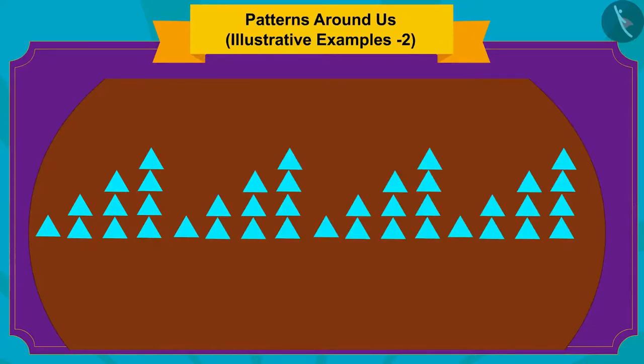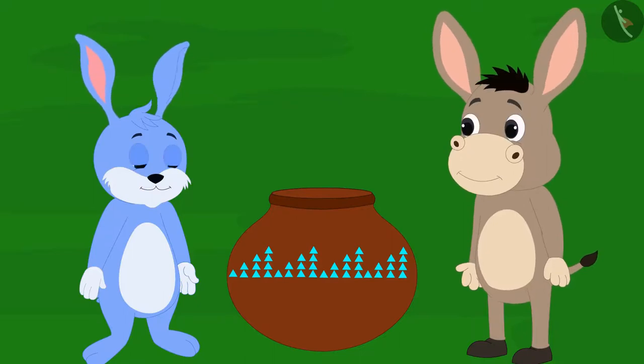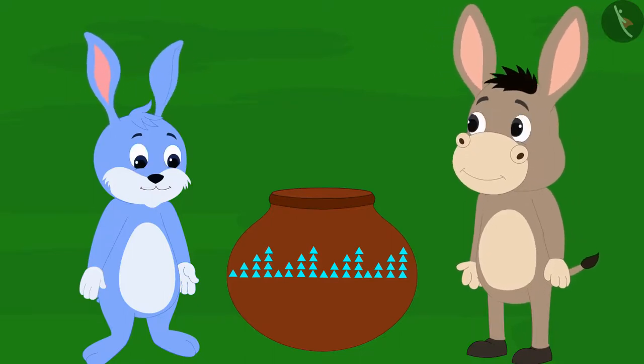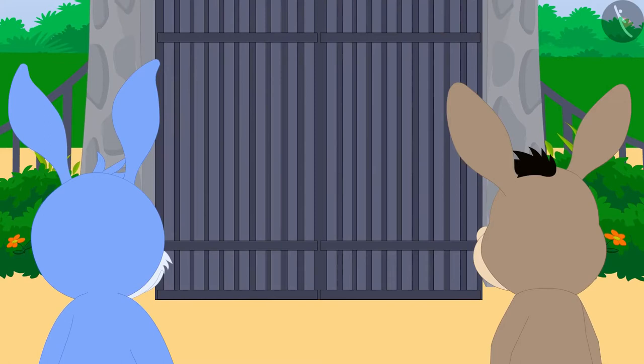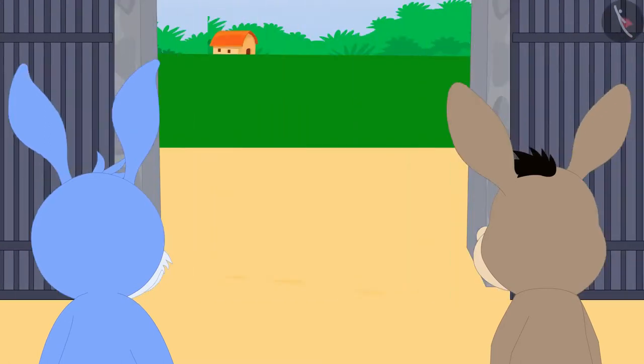You have completed this pattern perfectly! Here, this pattern is made by repeating a group of one, two, three and four triangles. This time, as soon as Bunny and Bhola completed the pattern of the pot, the exit gate appeared in front of them.